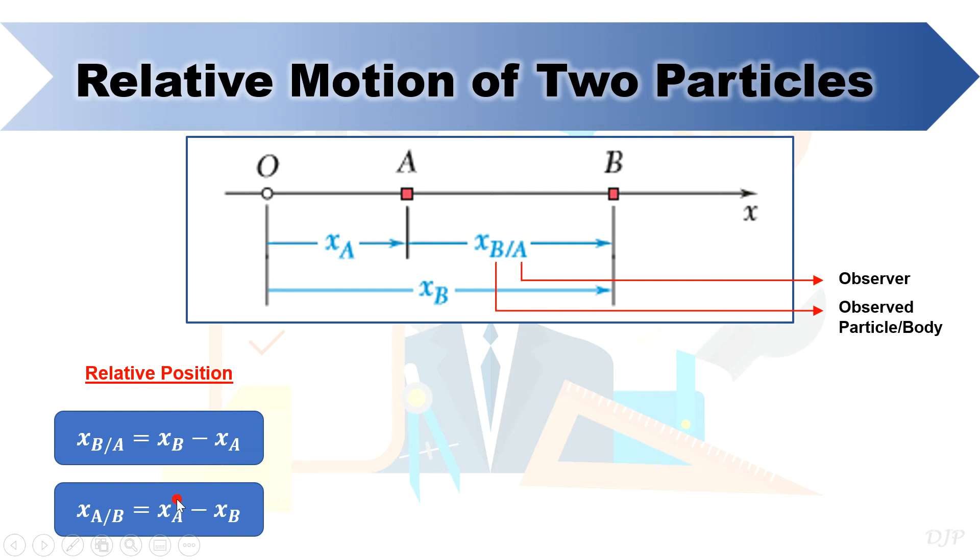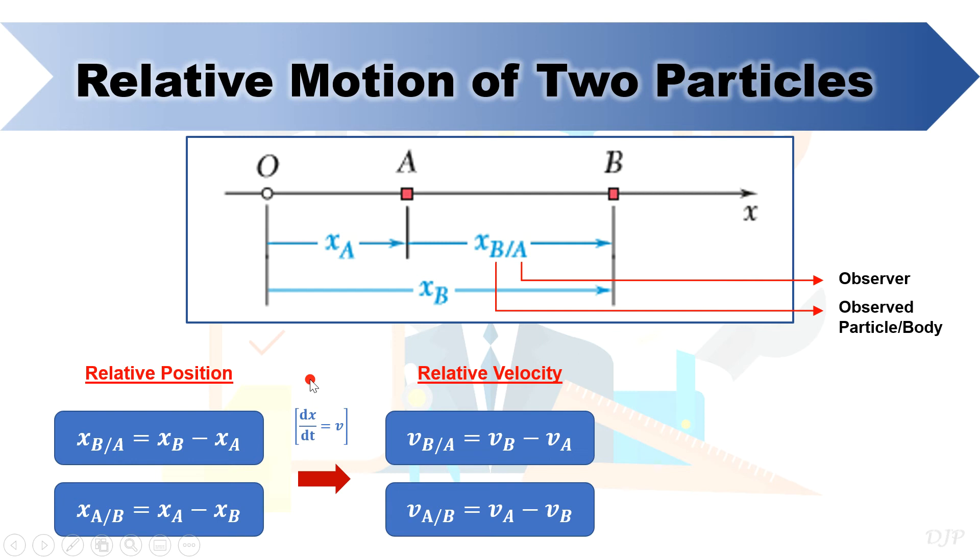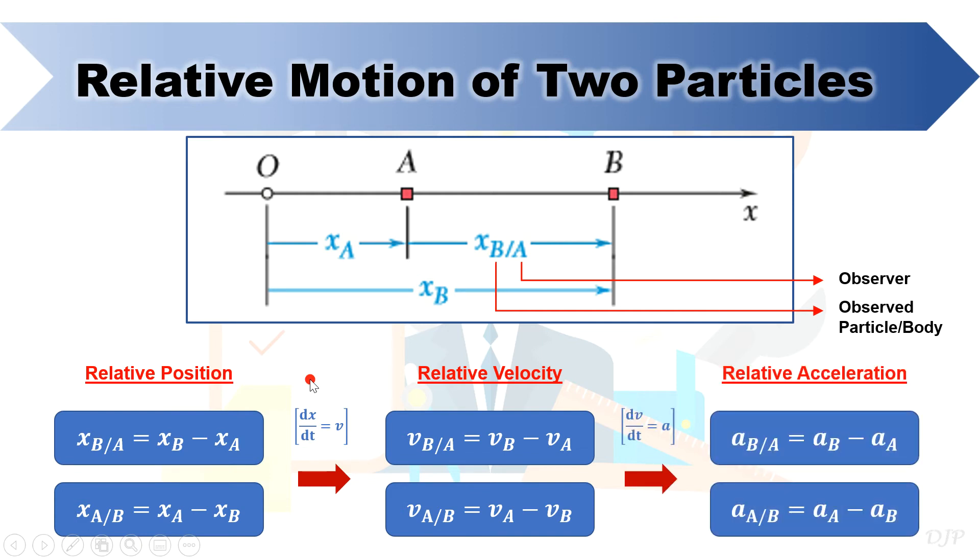If we differentiate these two equations with respect to time, we will now have the equations for relative velocity. Notice that the pattern of the subscripts is still the same with the previous equations. When we continue to differentiate these two equations with respect to time, we will now have the equations for relative acceleration. Even here, the pattern of the subscripts still upholds.